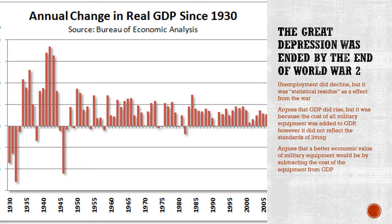Ferreira states that unemployment did decline, but it was statistical residue as an effect from the war — because of the war, soldiers and factory workers had jobs that wouldn't exist without it. He also argues that while GDP did rise, it was the result of military equipment being added to GDP and did not reflect actual living standards, since typically when GDP rises, standards of living rise with it — and at this time they were not. You can see by the graph how much GDP increased from 1939 to around 1944. While GDP was significantly increasing, it was due to military production. From 1939, the U.S. was creating equipment to send to the Allies — Russia, the United Kingdom, and briefly France — and eventually producing their own, reaching its highest point around 1942–1944.